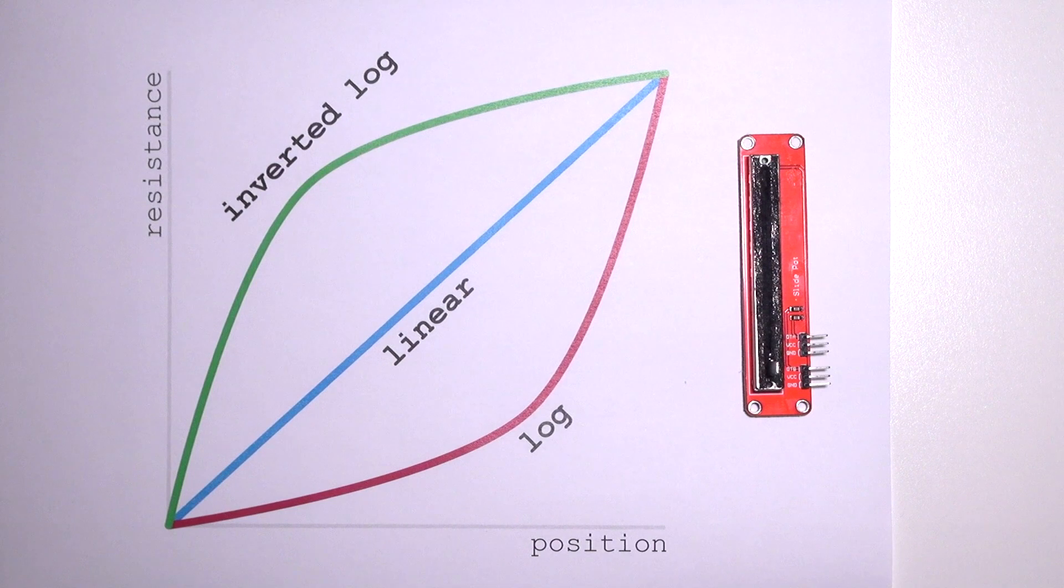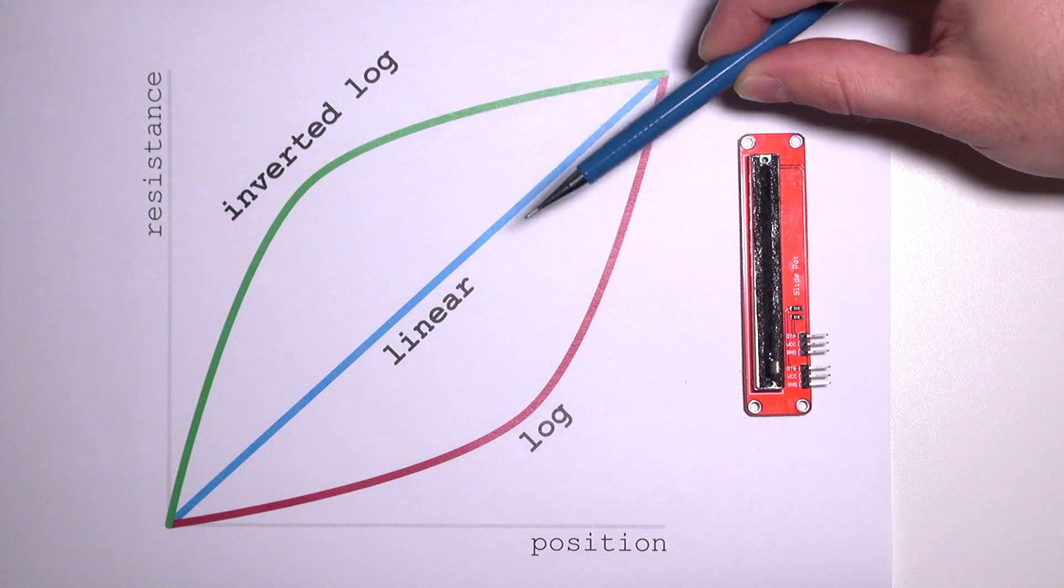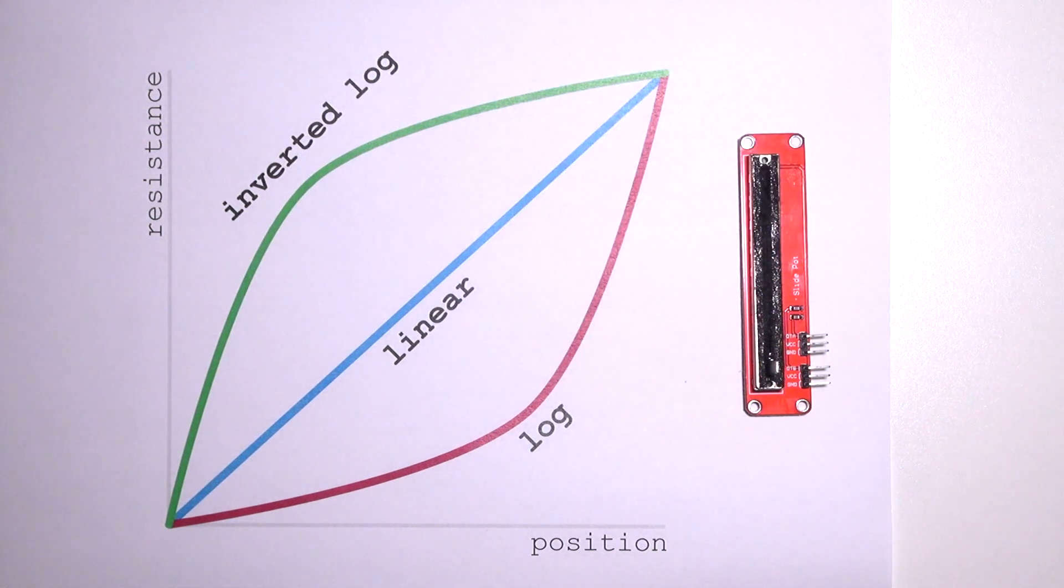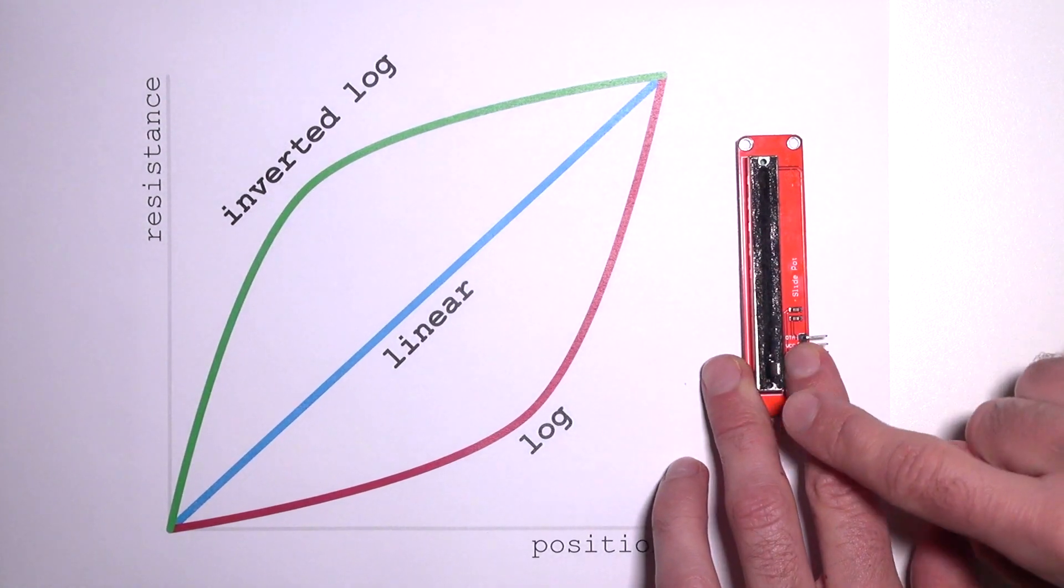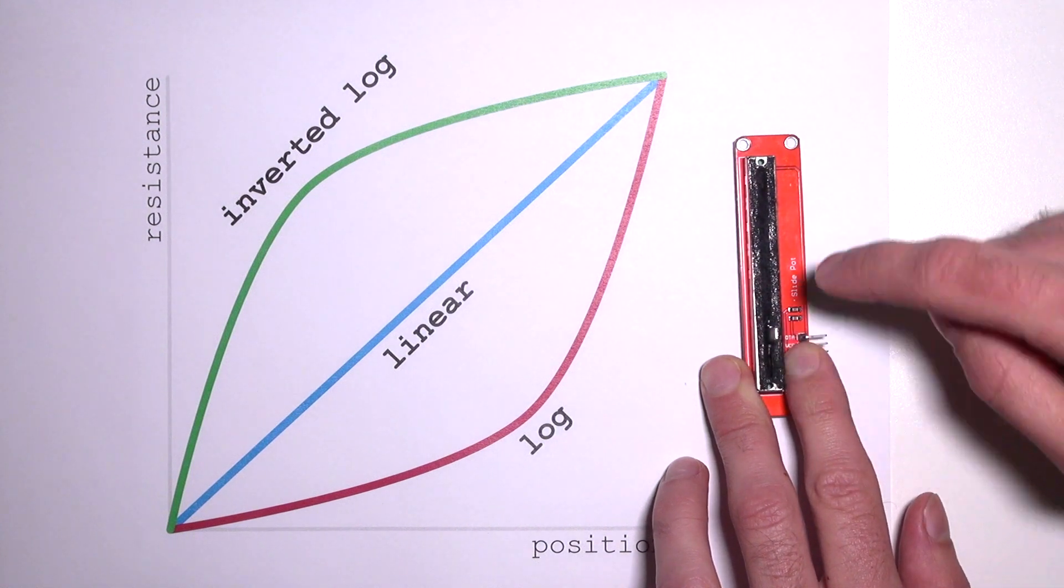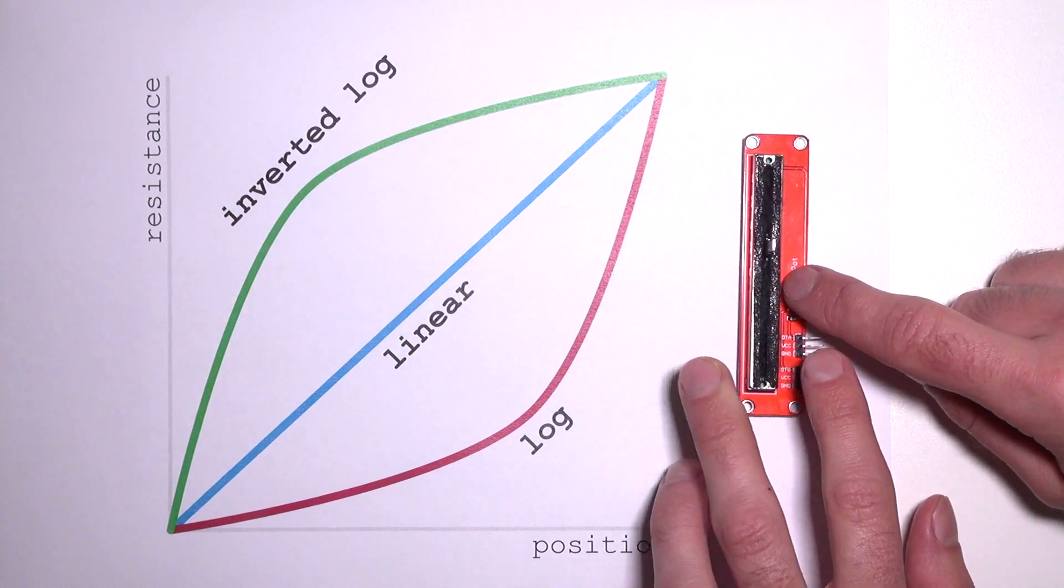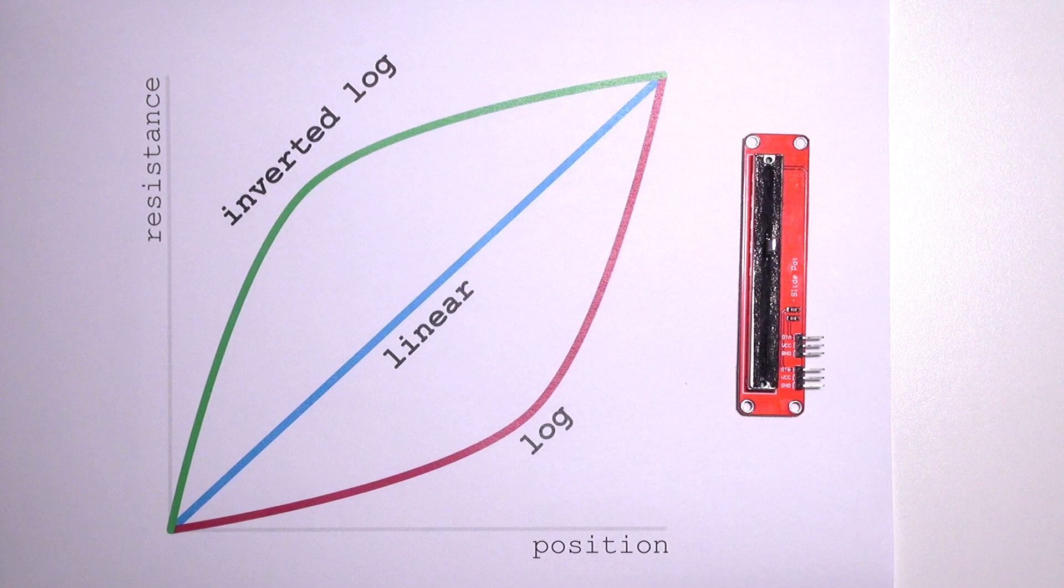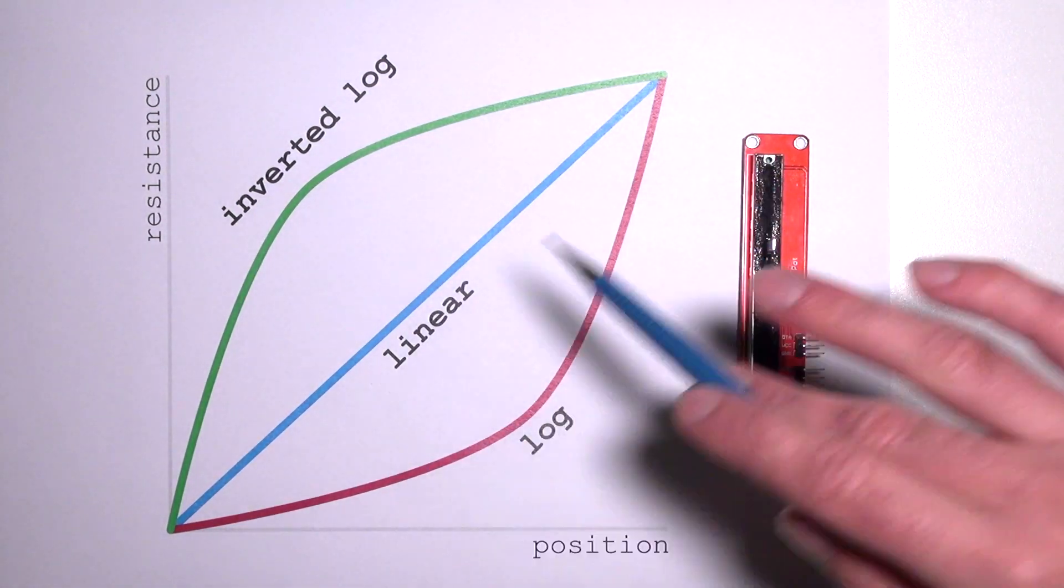The inner scaling of this sliding potentiometer depends on the type you've bought. There are basically three different types of sliders: inverted logarithmic, linear, and logarithmic. If you have a slider with the same amount of resistance added when you move from bottom to top and from center to top, then it's linear. As you can see in the chart, the resistance and position increase in the same steps every time.